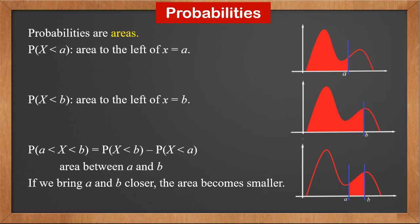If we bring a and b closer and closer, the area between a and b becomes smaller and smaller. If finally those two lines touch so that a is equal to b, then the area becomes 0. Therefore, P(x equals a) is 0. This is an important feature of continuous probability distributions: the probability that x is equal to a particular value is 0. Remember this important feature because we'll use it later.